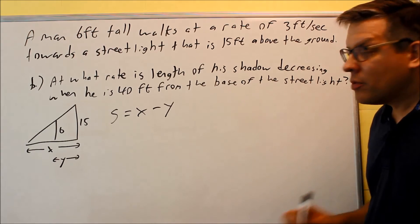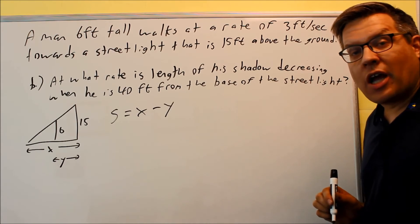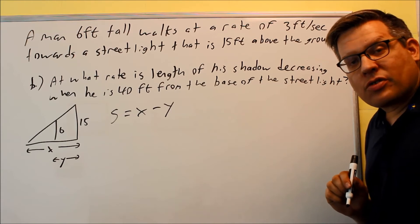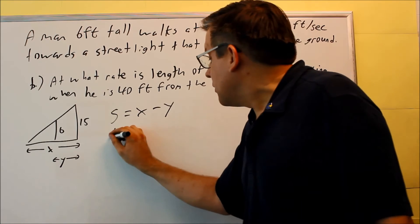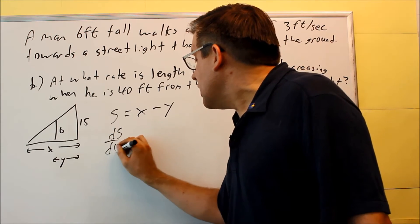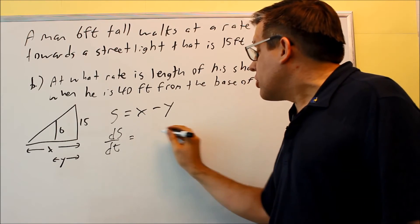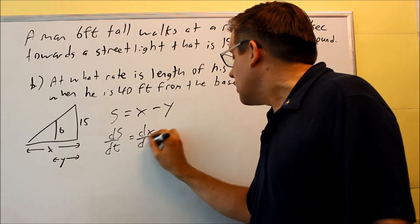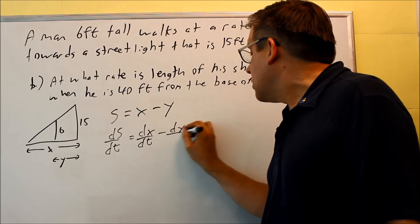We have a formula relationship based on the variables we have here. The derivative implicitly with respect to time, ds dt, and we're going to do the derivative of each of these. That's dx dt minus dy dt.